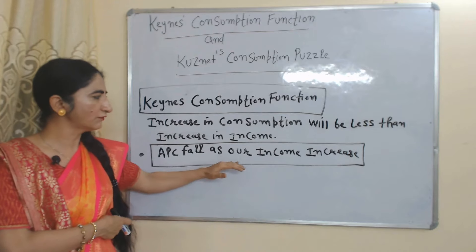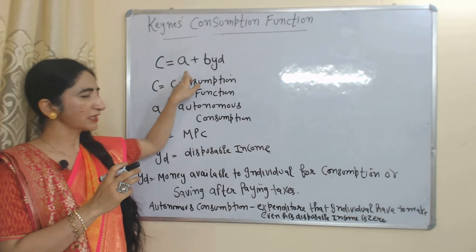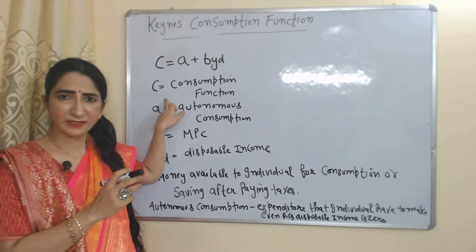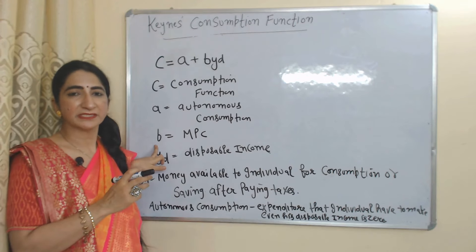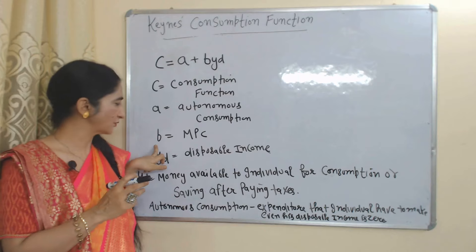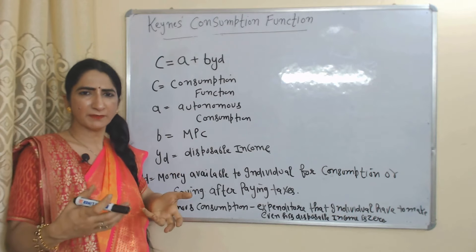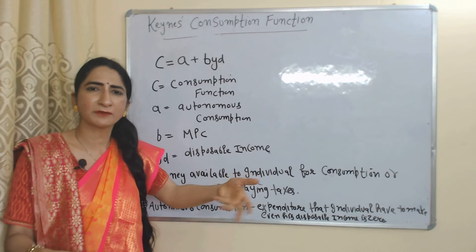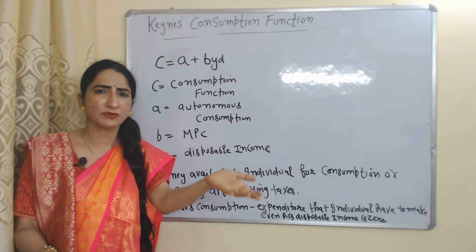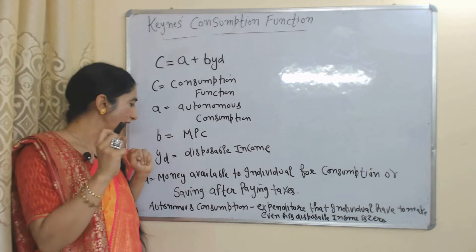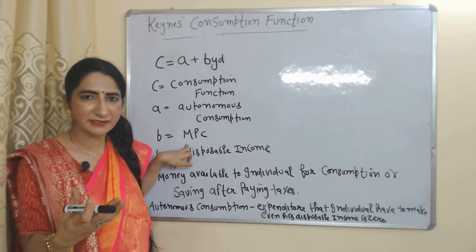According to Keynes, average propensity to consume will fall as our income increases. Now we will see Keynes' consumption function: C = a + bYd. Here C represents consumption, a represents autonomous consumption, b represents MPC — marginal propensity to consume — and Yd represents disposable income. Disposable income means money available to an individual for consumption or saving after paying taxes.